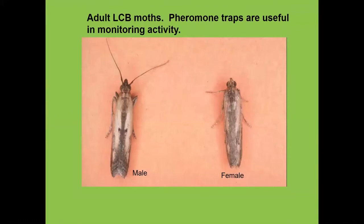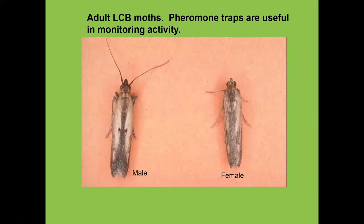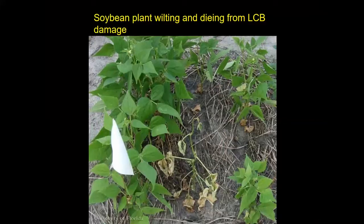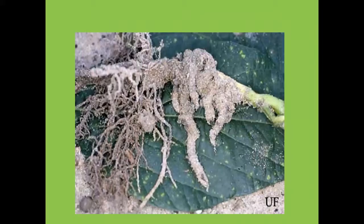This moth can be trapped with pheromones. There's a model developed at Auburn University to help people use pheromone traps and monitor weather data to predict when lesser cornstalk borers are going to be an issue. You can see a soybean plant killed by lesser cornstalk borer that bored into the plant. These are feeding tubes on larger plants, showing how big the tubes can actually get. This is one way you can pull up plants and look for presence of lesser cornstalk borer larvae in your soybean field.